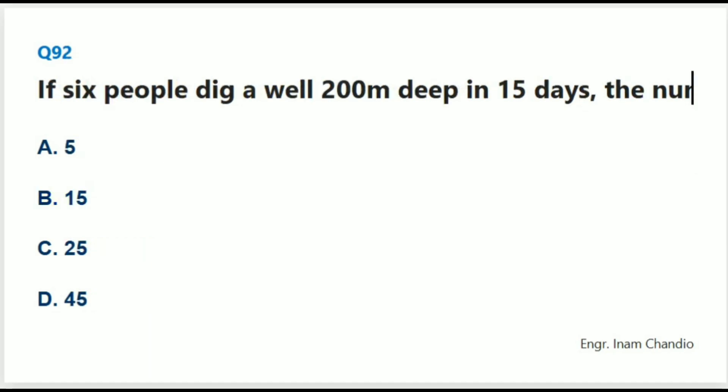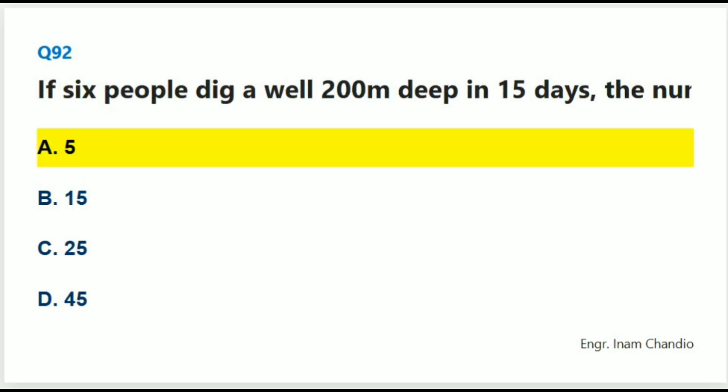If 6 people dig a well 200m deep in 15 days, the number of people required to dig the same well in 18 days is: The correct answer is A. 5.